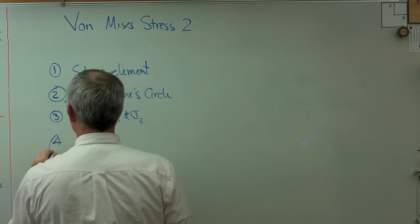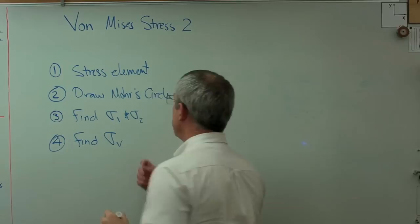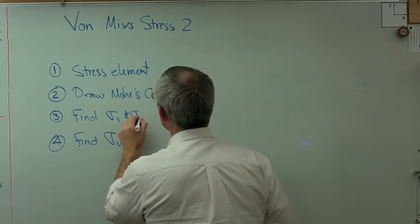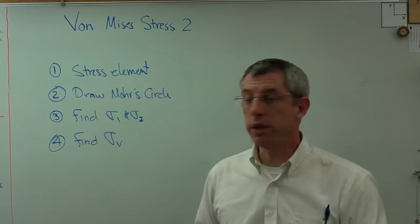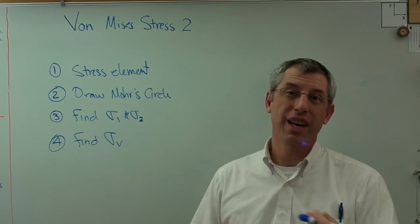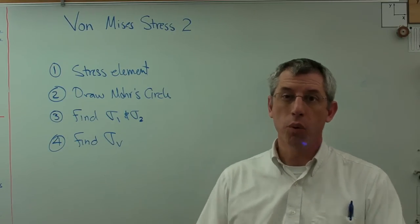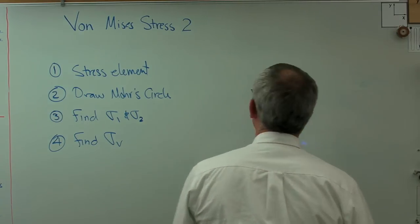And we'll call those sigma 1 and sigma 2. And then for step four, we'll find sigma v. That's the von Mises stress. And if the von Mises stress is less than our allowable stress, we're okay. If it's more than our allowable stress, we're predicting ductile failure. So, let's get started here.